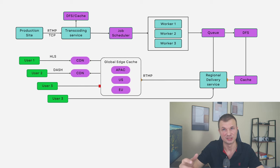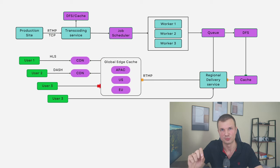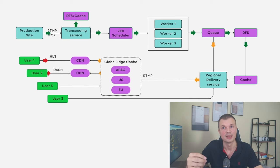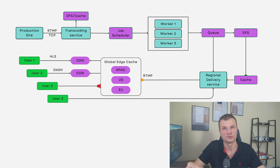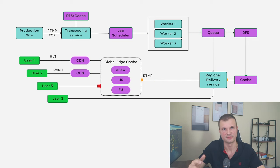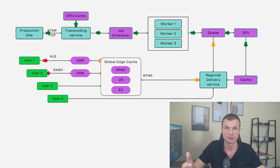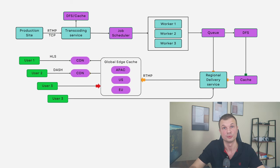Now we have a regional delivery service — a service that listens to the job completion queue. It's a system or set of microservices responsible for two things: first, pushing the video into global edge servers, and second, serving video on pull requests if it's absent in the CDN or global cache. As the regional delivery service receives each one-second segment, it pushes it to the global edge cache — a set of data centers and servers around the world responsible for storing videos and serving them to local CDNs, ISPs, or end users.